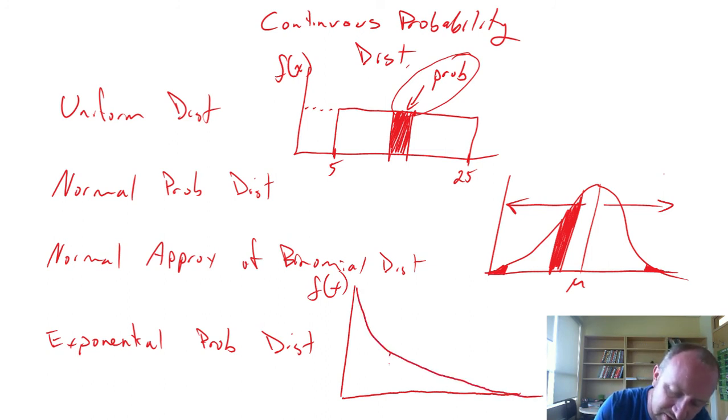It'll have the mean value somewhere in here. This probability distribution is used very similar to the Poisson.